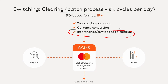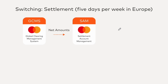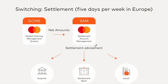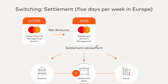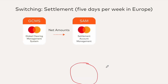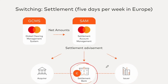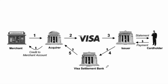There is another video linked at the end explaining the interchange and service fees in detail. In the settlement process, a settlement advisement is sent informing the parties of the settlement details. There is also a settlement bank — an intermediary bank where the amount is transferred from the issuer to the settlement bank and finally to the acquirer.